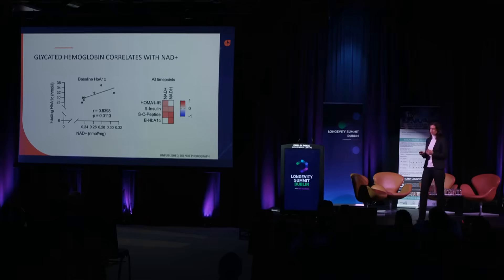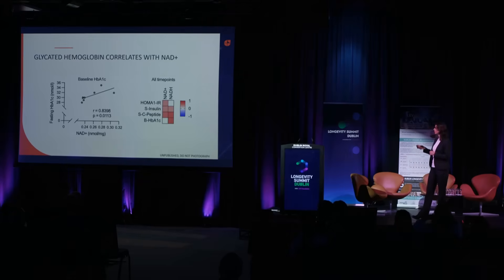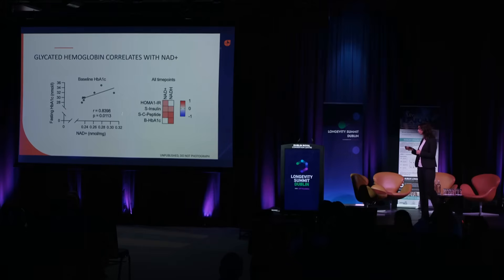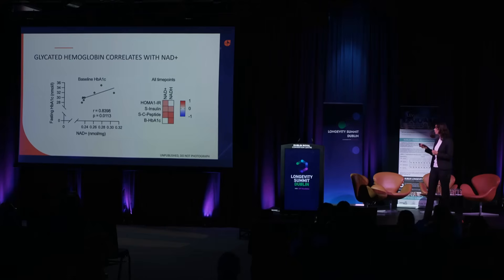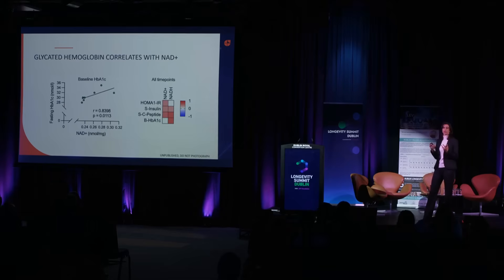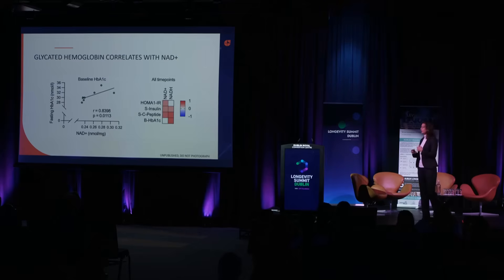Focusing more on the controls and glucose metabolism, it was already clear at baseline that glycated hemoglobin in blood correlates with levels of NAD+. Taking all time points across the clinical trial, there was a strong correlation: serum insulin, C-peptide, and glycated hemoglobin in whole blood all correlated with both NAD+ and NADH — suggesting negative effects associated with NAD levels increasing above the normal range.